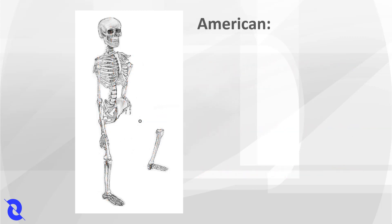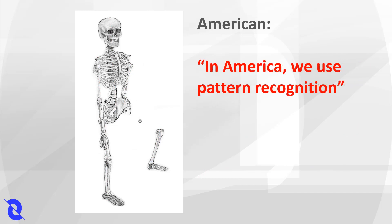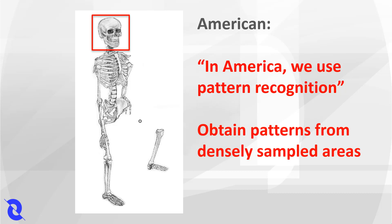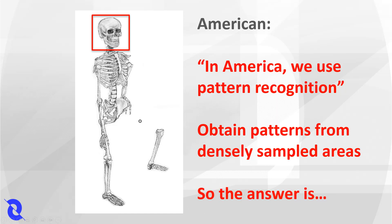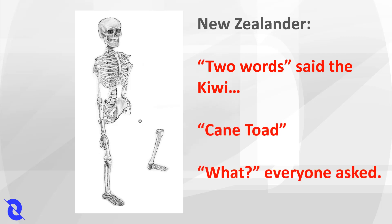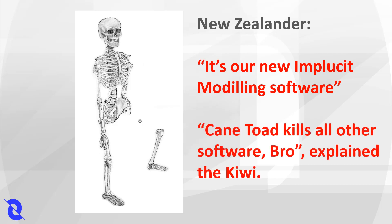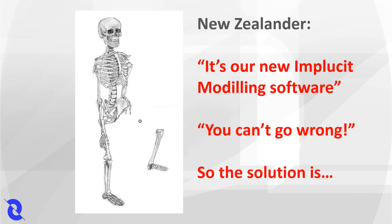Then the American said, "Oh come on, we're not back in the last century. In America, we use pattern recognition. We take patterns from densely sampled areas like this, use it in less sampled zones, and we call this multipoint statistics. So the answer is this." Then the New Zealander said, "Two words: Cane-toad. It's our very implicit mining software. Cane-toad kills all other software, right? You can't go wrong. So the solution is this."